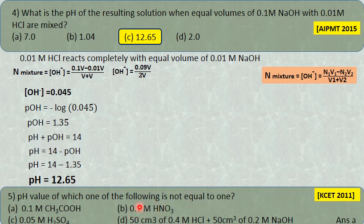Verification: 0.1 molar HCl completely dissociates to give 0.1 mole of H⁺, so pH = 1. For 0.05 molar H₂SO₄: multiply by basicity 2, giving 0.05 × 2 = 0.1 normal, which again gives pH = 1. So the answer is the 0.1 mole of acetic acid, which does not give pH = 1.